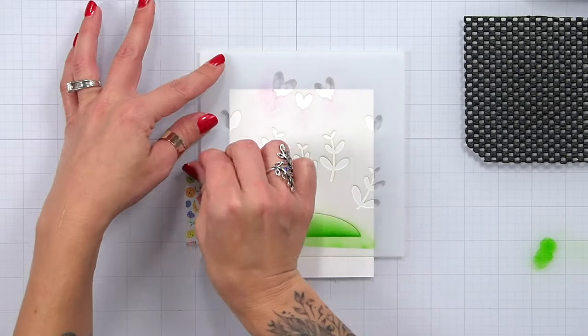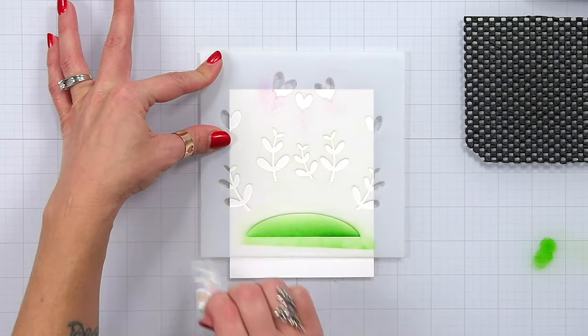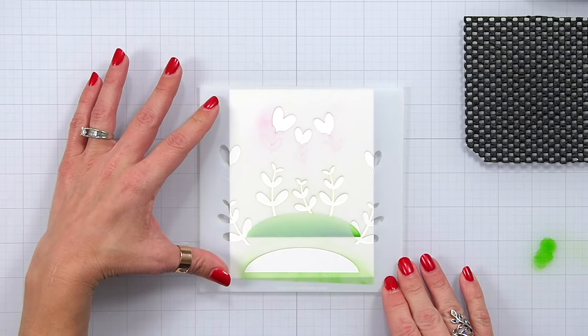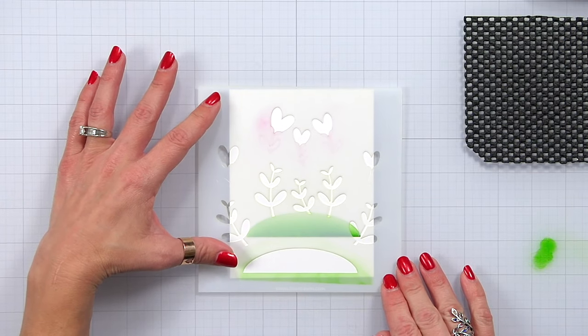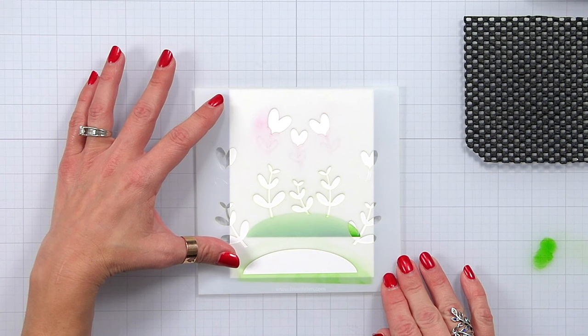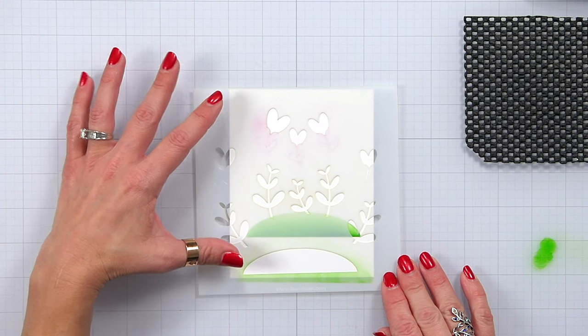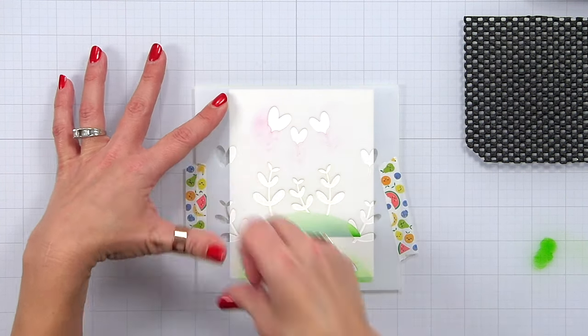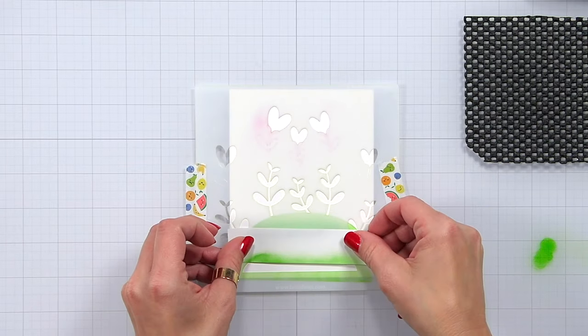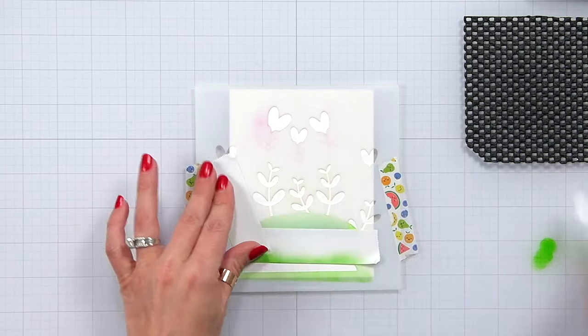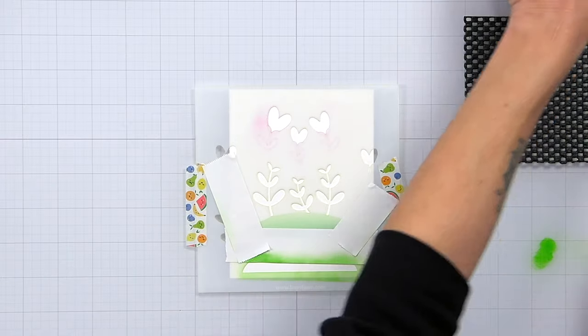Then I can remove my post-it tape and my washi tape so that I can take the stencil and shift it down. Really what I'm focusing on right here are the three stems in the middle. Once I feel like I have them centered I'm going to hold that stencil down once again with the washi tape and then mask off the areas around it.